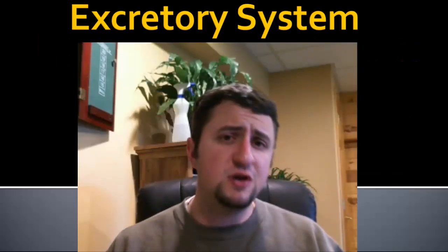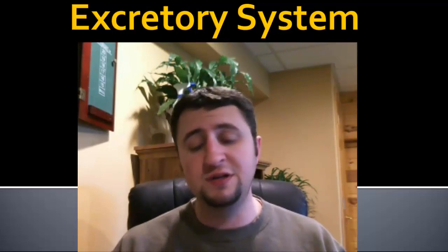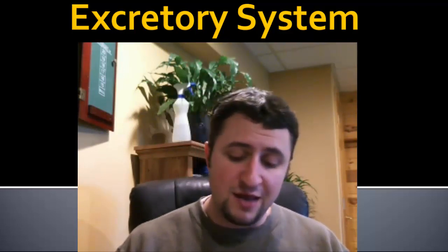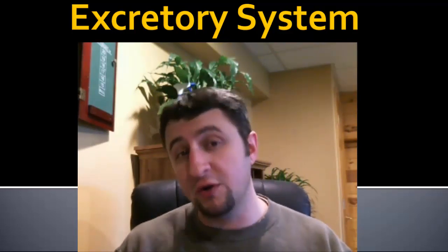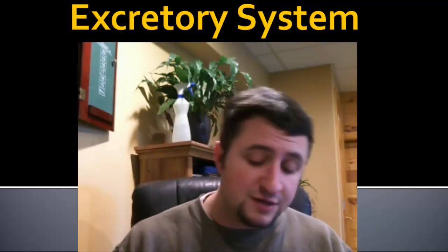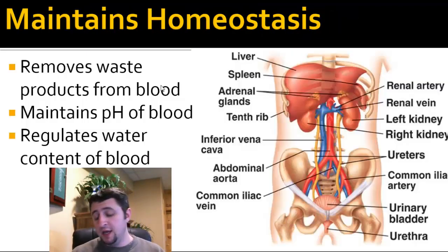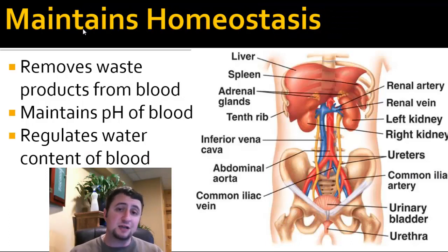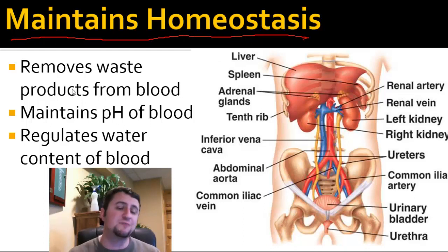Hey there guys, Mr. Herbst here. Today my focus is going to be on the excretory system. The excretory system is also sometimes referred to as the urinary system because it is the system that produces urine. The most important function of the excretory system is that it maintains homeostasis — it does that because it removes waste products from our blood.